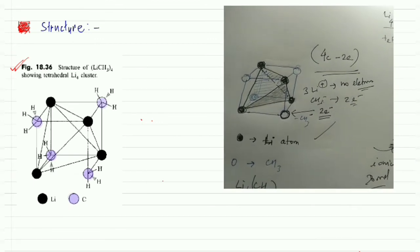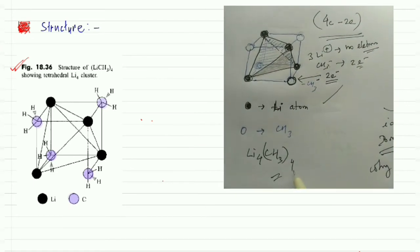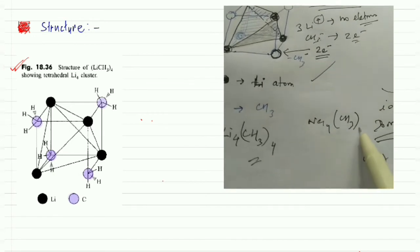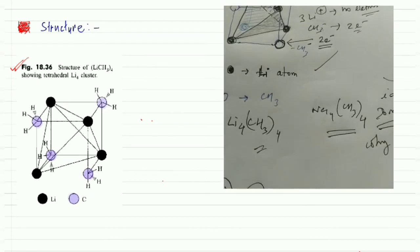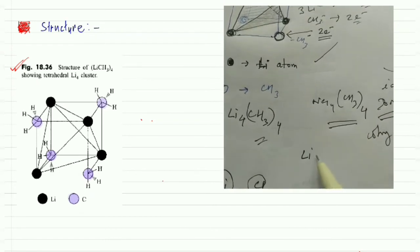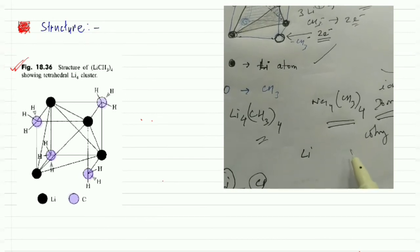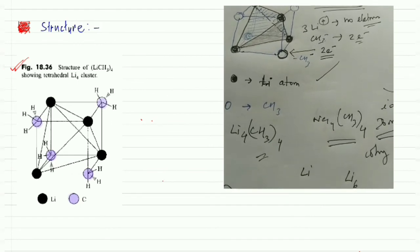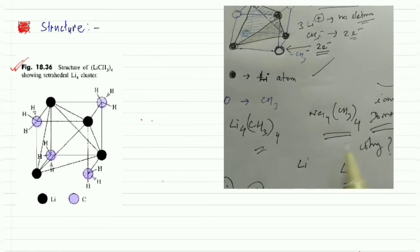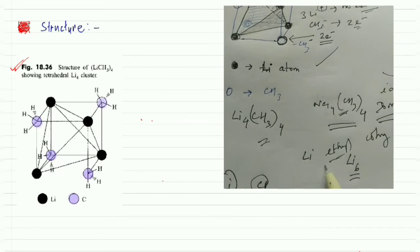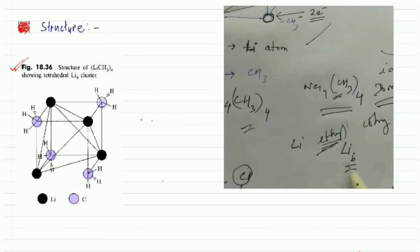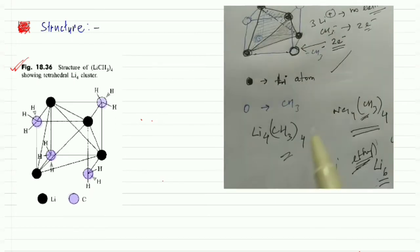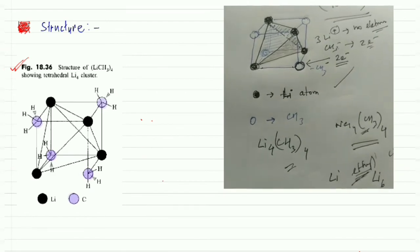Similarly, Na₄(CH₃)₄ gives an analogous tetrahedral structure. However, when lithium forms a bond with ethyl groups instead of methyl, it gives a hexamer — Li₆ with an octahedral cluster — rather than the tetrahedral tetramer. This is all about the structure of Li₄(CH₃)₄.